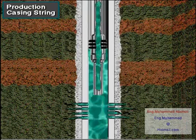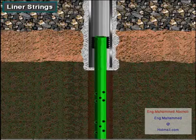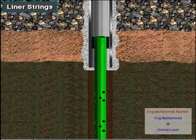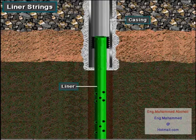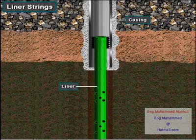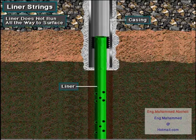Sometimes well owners run liners instead of full casing strings into the well. A liner is a shortened string of casing used to case the smaller open hole section below an existing casing string. It's just like casing except that a liner does not run all the way to the surface.